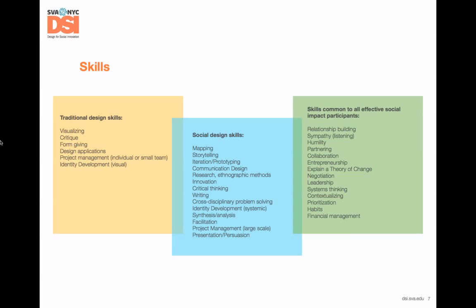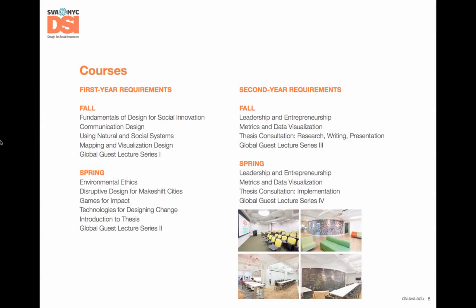From these faculty members and through the program, you'll learn what we call social design skills — a combination of the most important skills from traditional design and what anyone needs to be an effective participant in social impact work. We really emphasize mapping, storytelling, systemic thinking, critical writing, and ethnographic research. You'll also work on traditional design skills and other skills needed to be an actor in social change, like facilitation, negotiation, and relationship building.